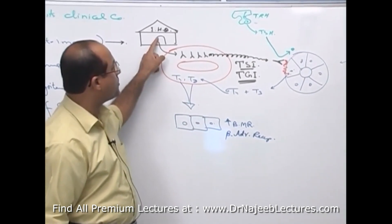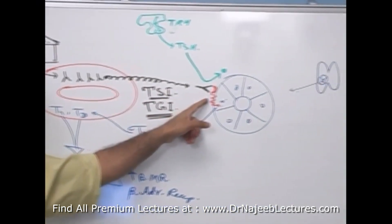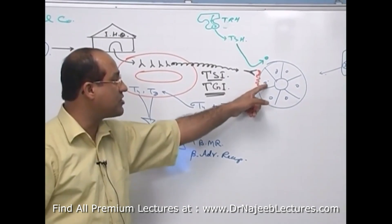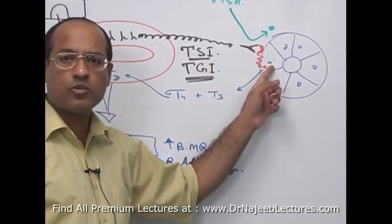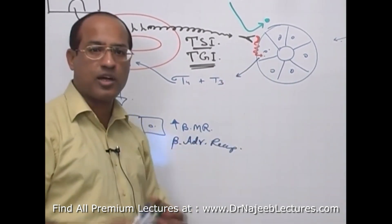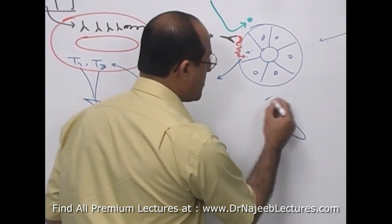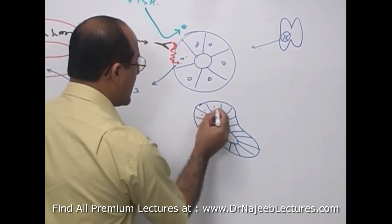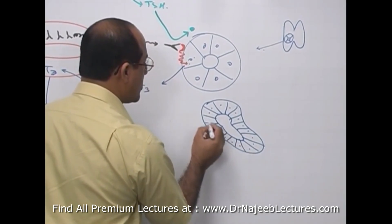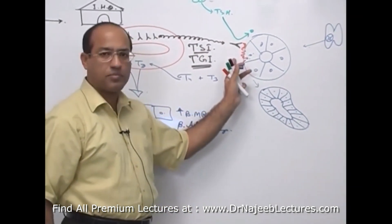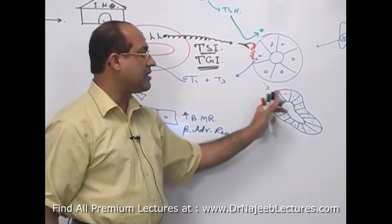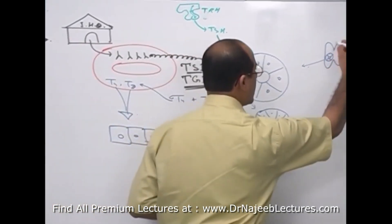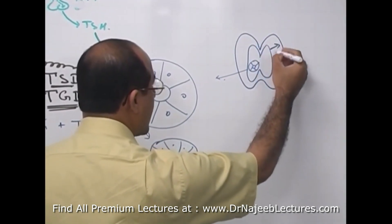To summarize the mechanism: the immune system produces autoantibodies that stimulate TSH receptors more strongly than normal TSH, forcing these cells to produce more T3 and T4. Along with that, these autoantibodies lead to growth of the cells — the cells become columnar, increase in number per follicle, and the total number of follicles also increases.